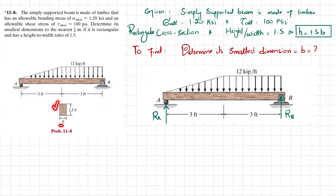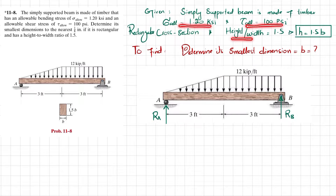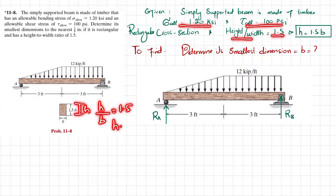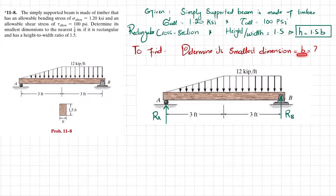The cross-section is rectangular with width b and height equal to 1.5b. The height-to-width ratio is 1.5, so h/b = 1.5, meaning height h = 1.5b. We need to find the smallest dimension b to the nearest 1/8 inch.